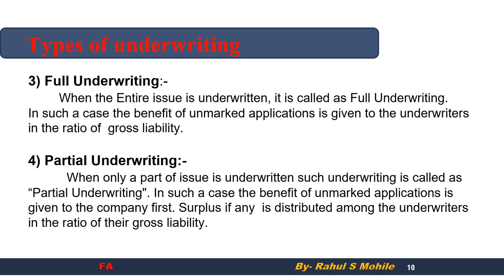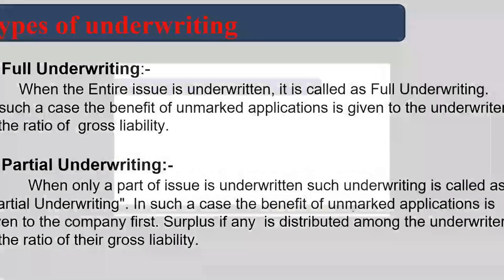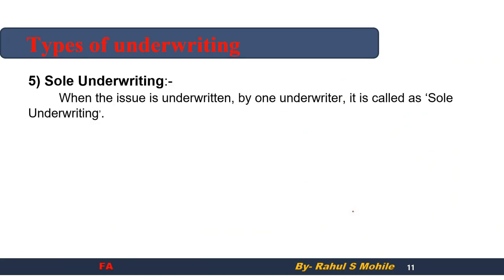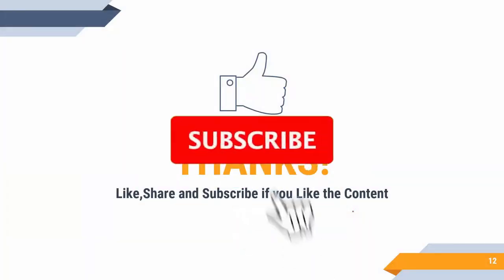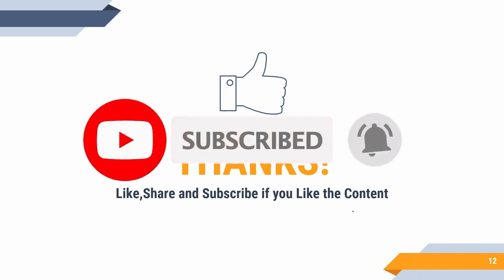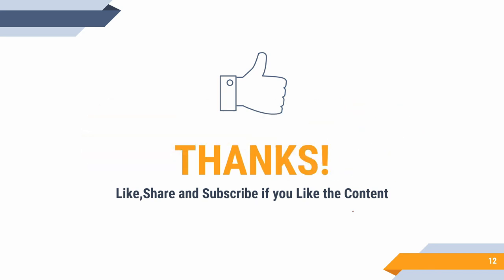Next is sole underwriting, where the entire issue is underwritten by only one underwriter. Joint underwriting is when two or more underwriters share the responsibility — like the example of A, B, and C we discussed. That's it from this video. If you liked the video, please like it and share it with your friends so they also know how we are preparing. Thank you very much, bye bye, take care.